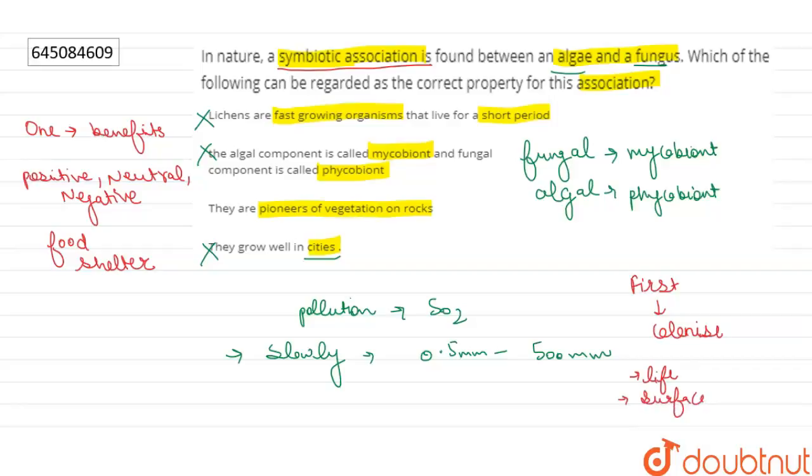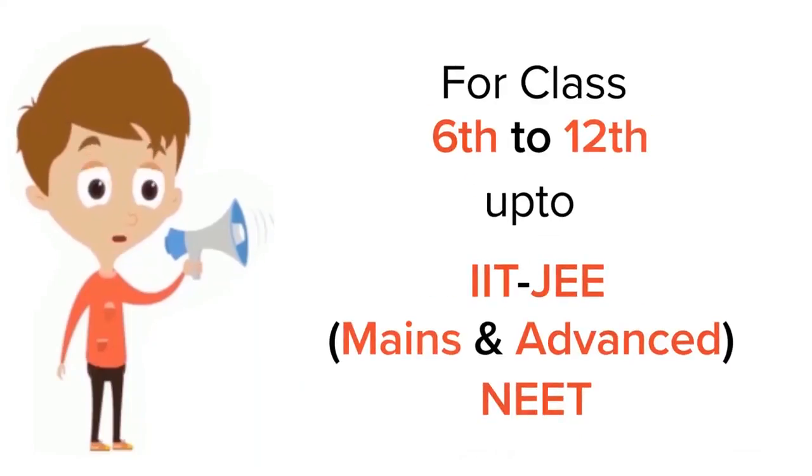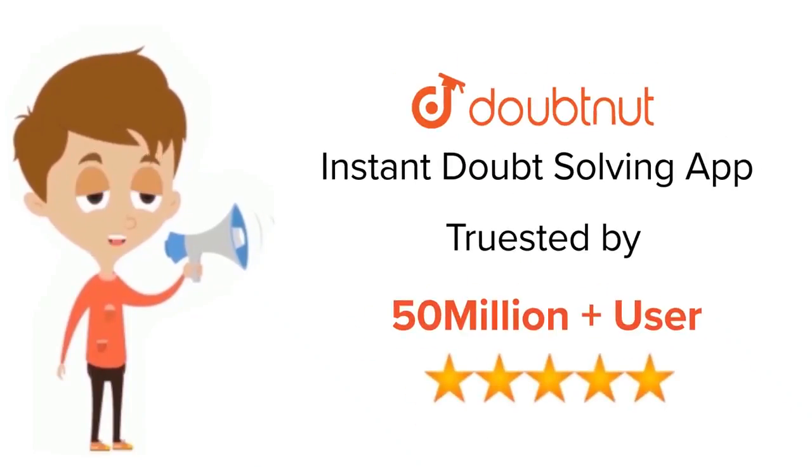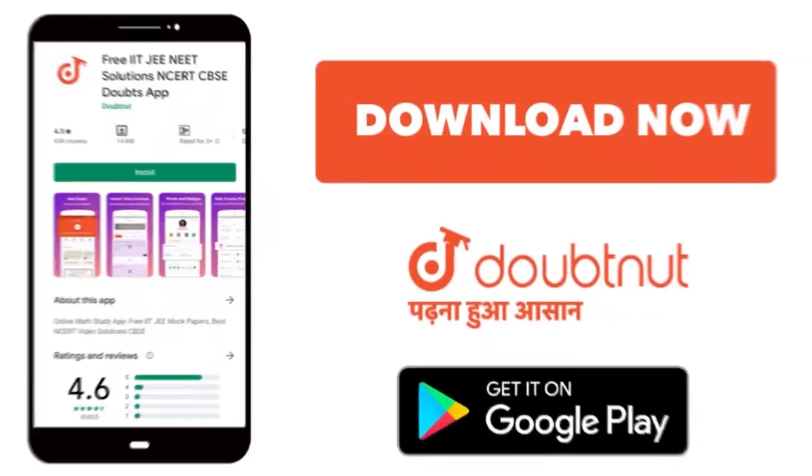They are known as the pioneers of vegetation on rock. Lichens grow on the rock surface and over time convert the rock into soil. So this statement is correct. The right answer to this question is option number 3. Thank you. For class 6 to 12, IIT-JEE, and NEET level, trusted by more than 5 crore students, download Doubtnut app today.